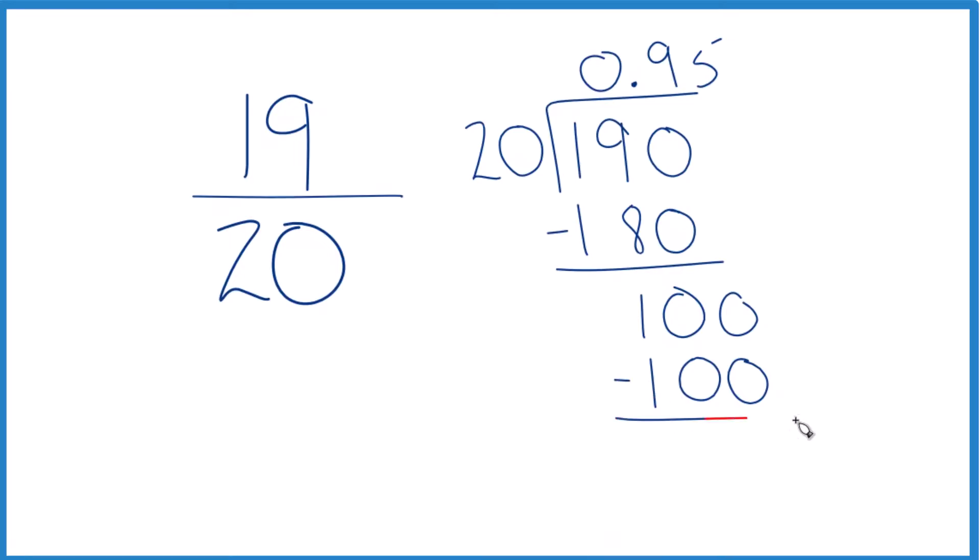When you subtract, you get no remainder. So in answer to our question, 19 twentieths, that's 0.95, equal to 0.95. So close to 1 but still less.